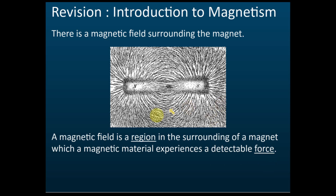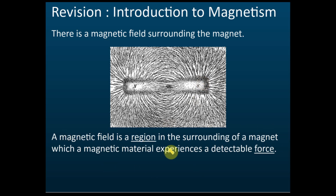If you place a magnetic material inside this region, it will experience a force — an attraction force. So if the magnetic material is attracted by the magnet, it is inside the magnetic field. If you place it somewhere and it is not attracted by the magnet, then it is outside the field. So make sure you remember: a magnetic field is a region in the surroundings of a magnet in which a magnetic material experiences a detectable force.